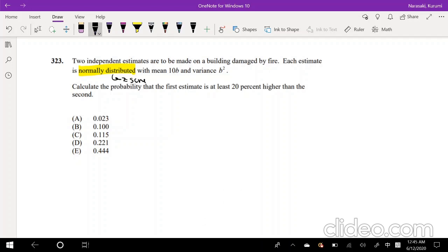Okay, so I think I'm going to set the first estimate to the random variable X and the second estimate to be a random variable Y. So we're trying to find a probability that the first estimate is at least, so it has to be greater than, 20% higher than the second. So that's 20%, 1.2Y. So this is what we're trying to find. So this is definitely multivariate, but it's totally doable. We got this.